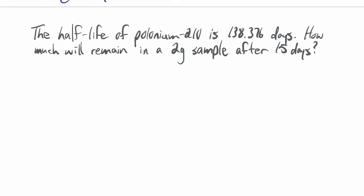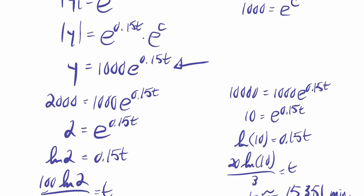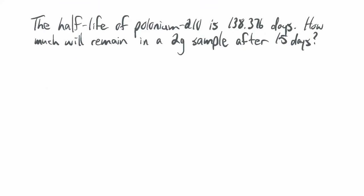Now a different example: the half-life of polonium-210, a radioactive isotope, is 138.376 days. How much will remain in a 2-gram sample after 15 days? The half-life means how long it takes to drop to half its value. We know the formula will be y = A·e^(kt), with initial amount A = 2. We've done the separation of variables process enough times, so we'll cut to the chase.